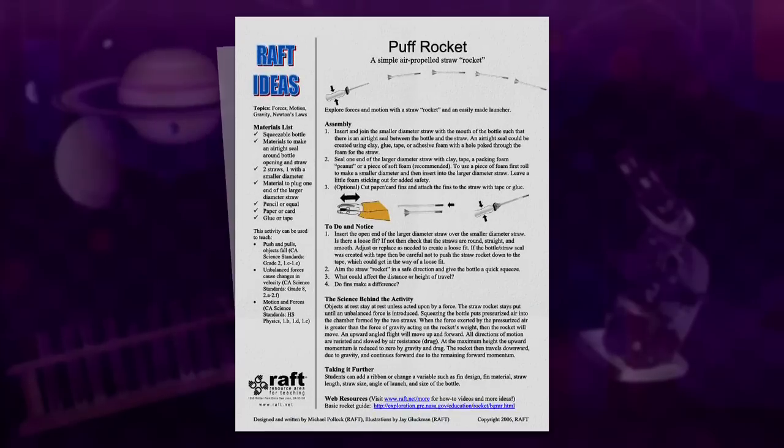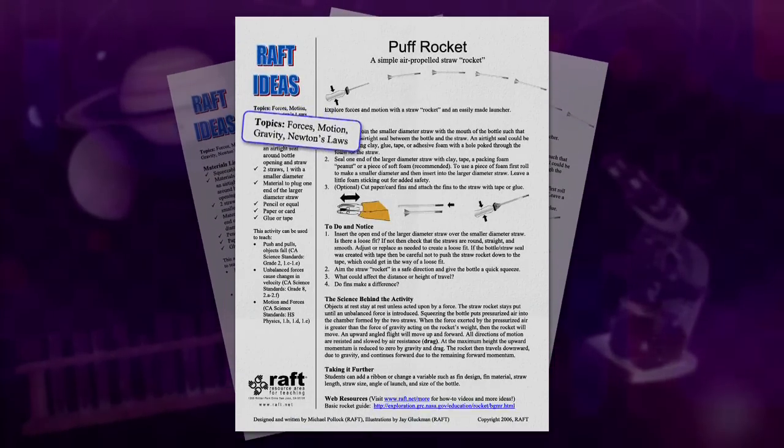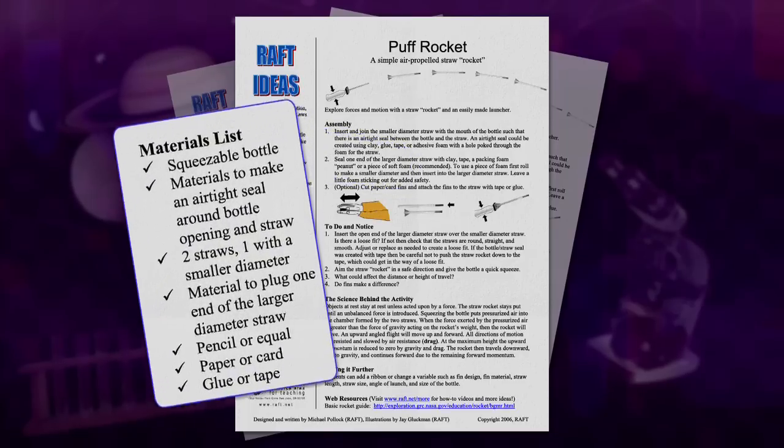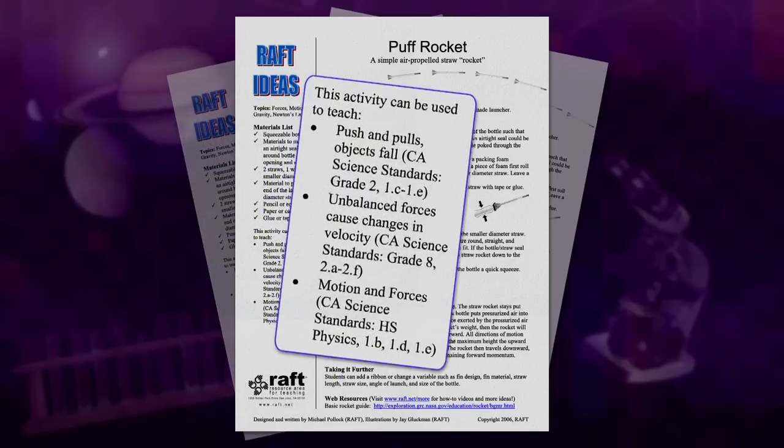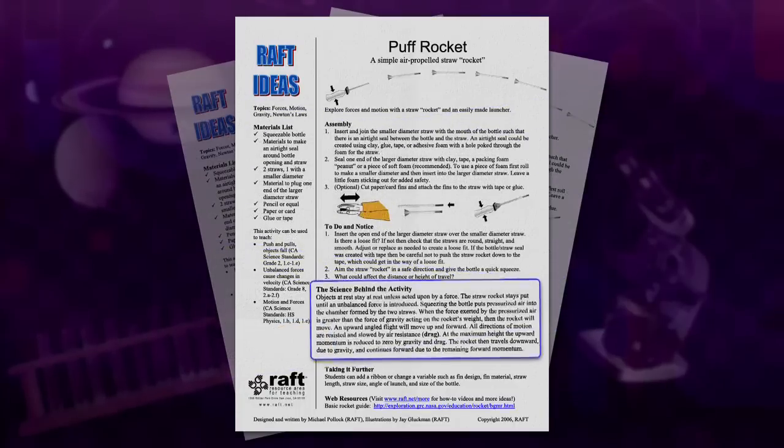If you've downloaded the RAFT idea sheet online, you'll find your sheet includes the following sections to guide you through the activity: topics, materials list, this activity can be used to teach, assembly to do and notice, the science behind the activity, taking it further, and web resources.